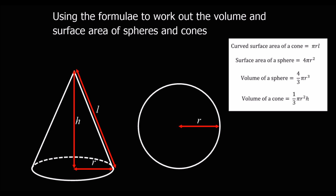In the exam we were given the formula to work out the volume and surface area of spheres and cones. For a cone, the curved surface area is pi times r times l, where l is the diagonal height. The volume of a cone is 1 third pi r squared times h, where h is the vertical height.